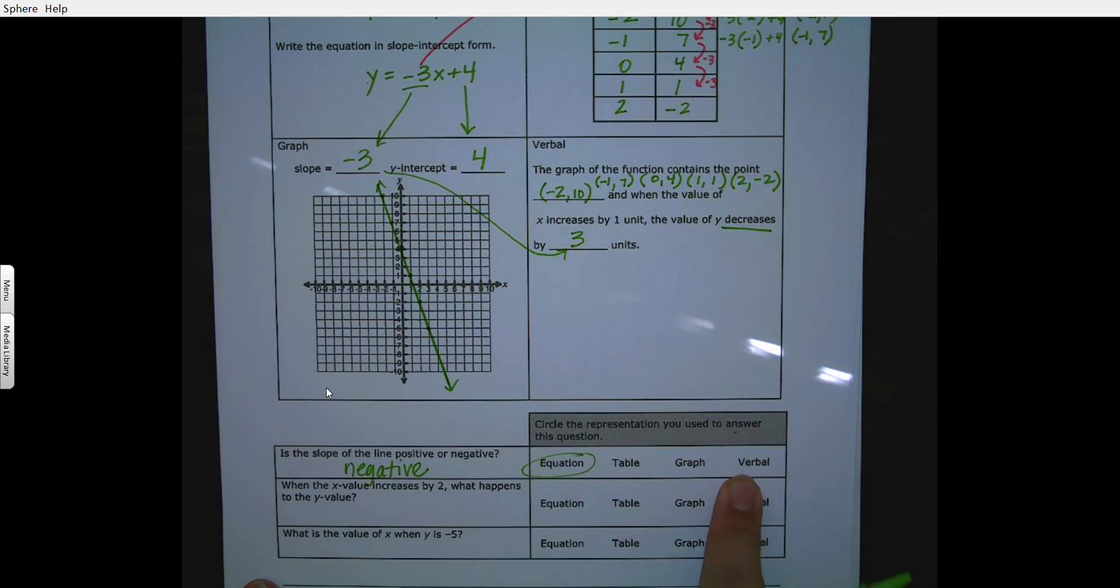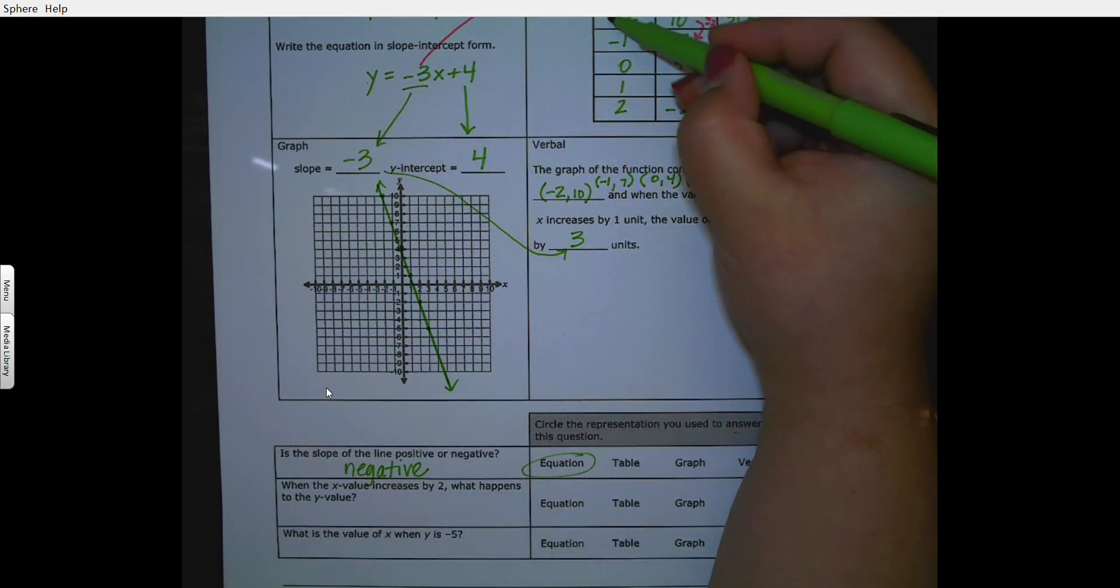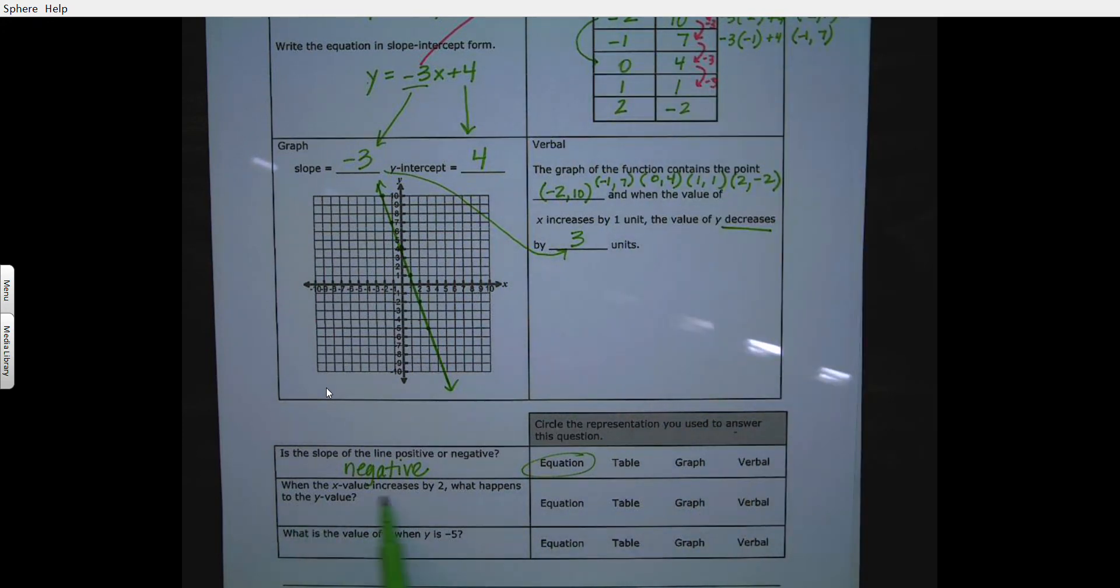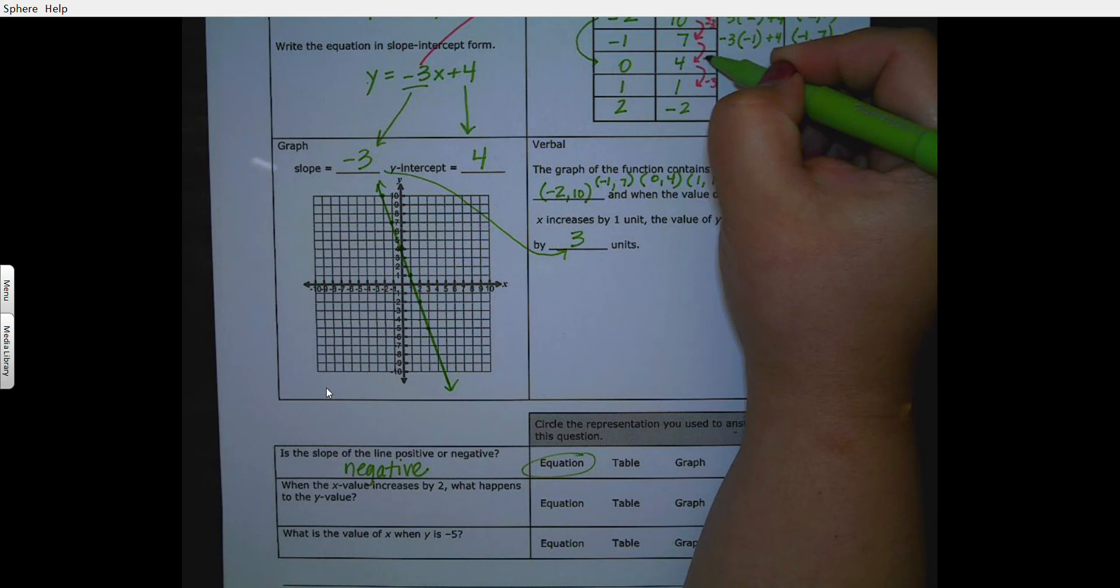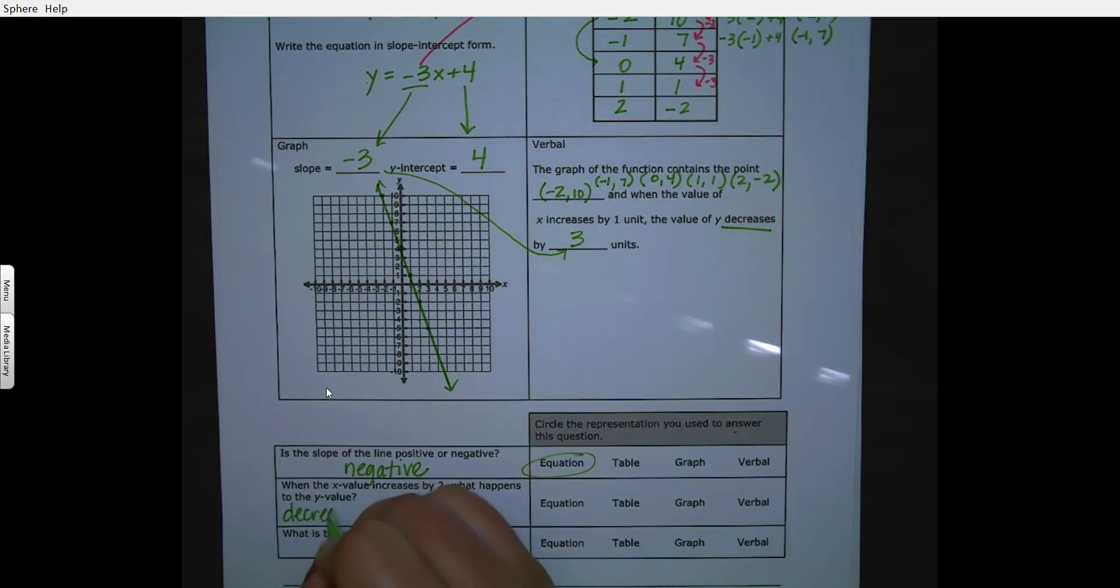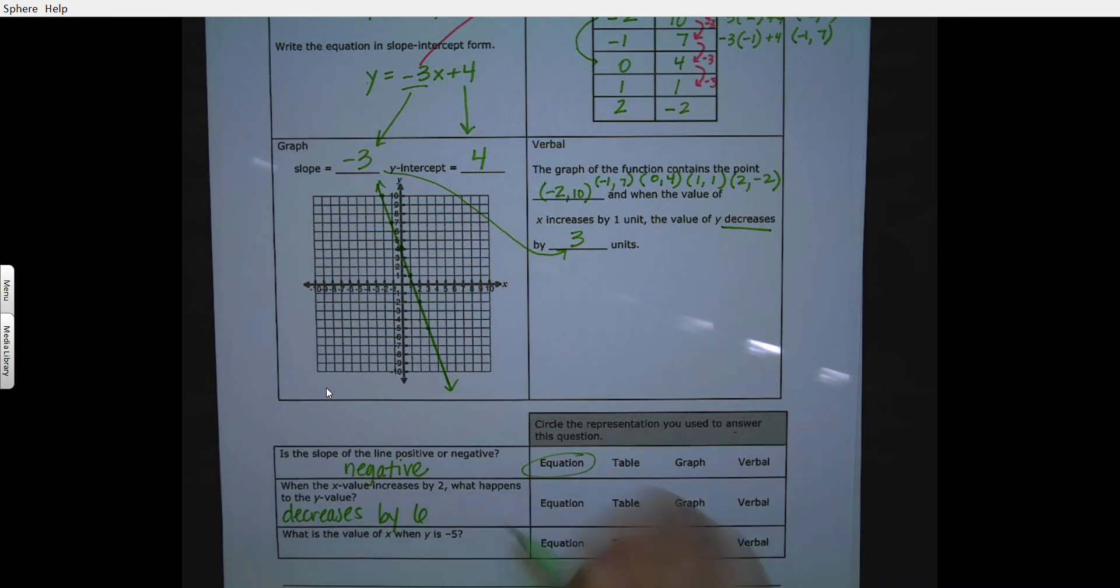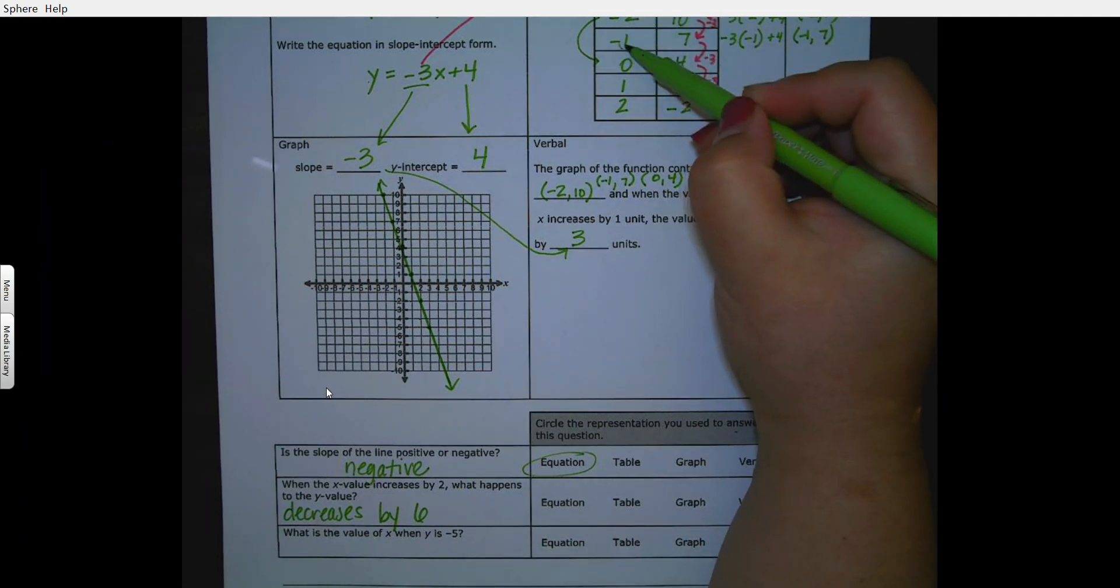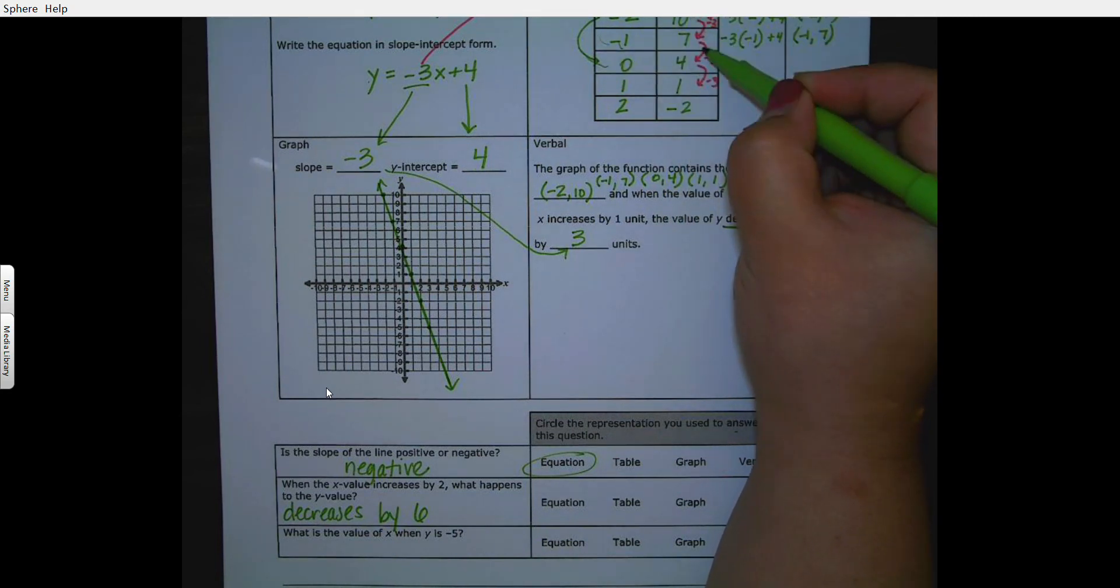When the x value decreased by 2, what happened to the y value? When the x value, sorry, yes increased by 2, what happens to the y value? It actually decreases by 6. I'm just skipping a number here, so instead of going down by 1 or up by 1, I'm going up by 2, increase by 2. So what happens when I go up by 2? It actually decreased by 6, and what did I use? I used the table here.